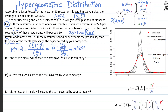So the chance that you end up selecting at least one expensive restaurant is pretty high. Now part B: one of the meals will exceed the cost covered by your company. You're interested in P(X = 1) — you want to select one of the expensive ones. In this case it will be 6 choose 1 times 14 choose 4, divided by the unconditional scenario 20 choose 5.